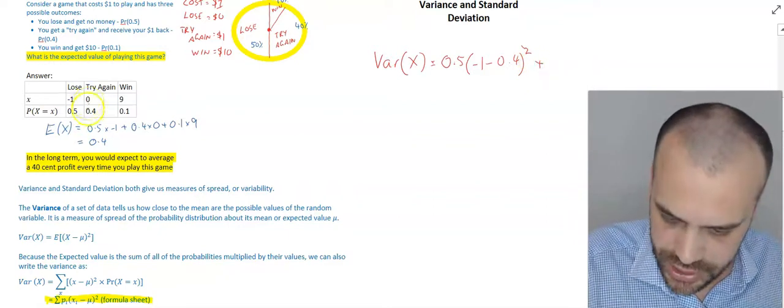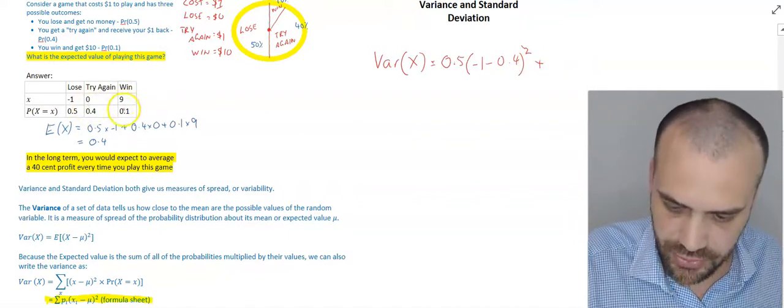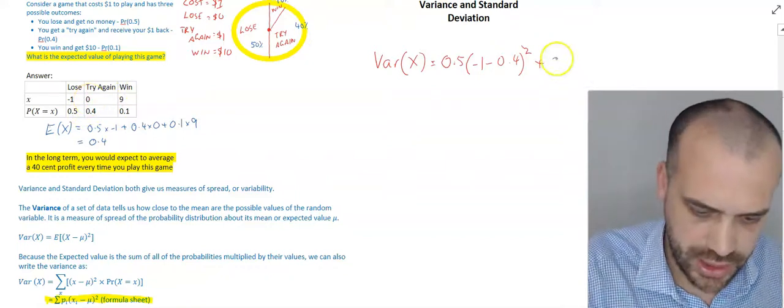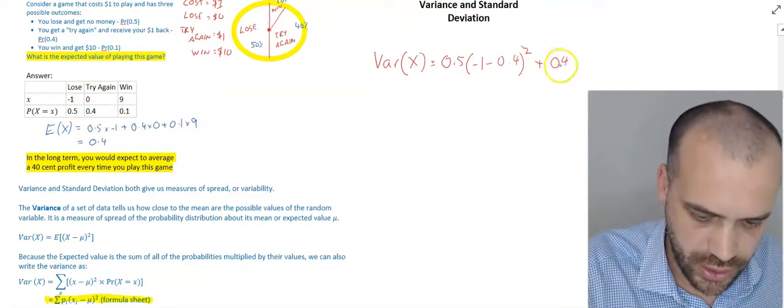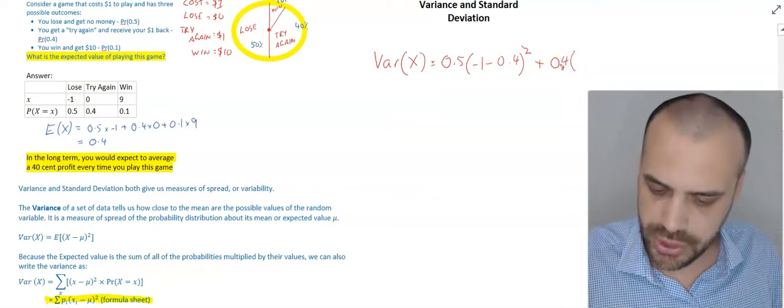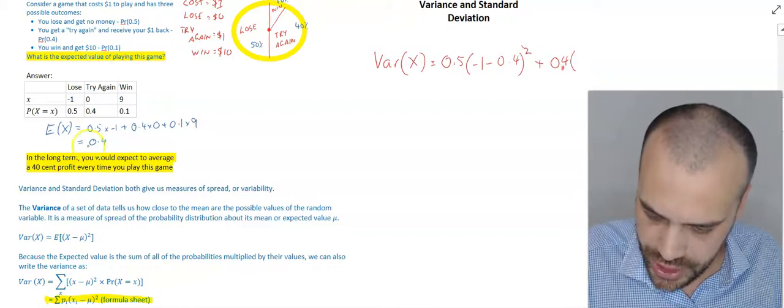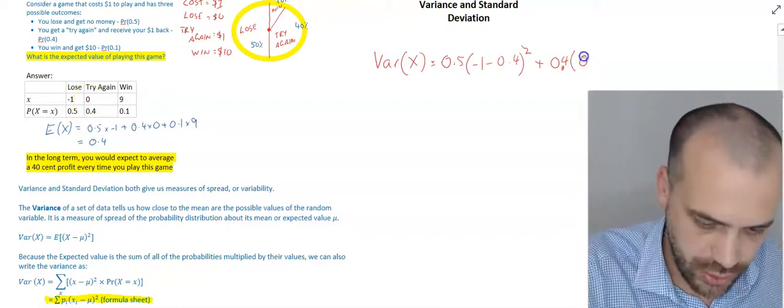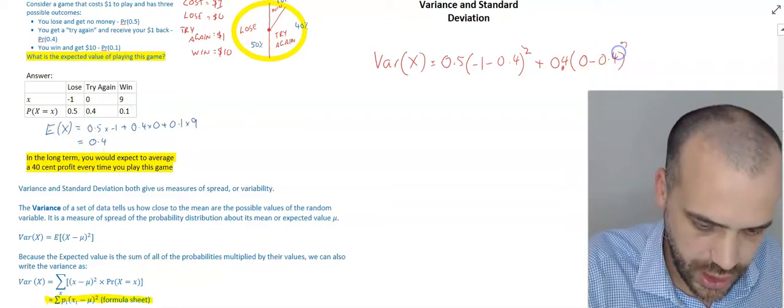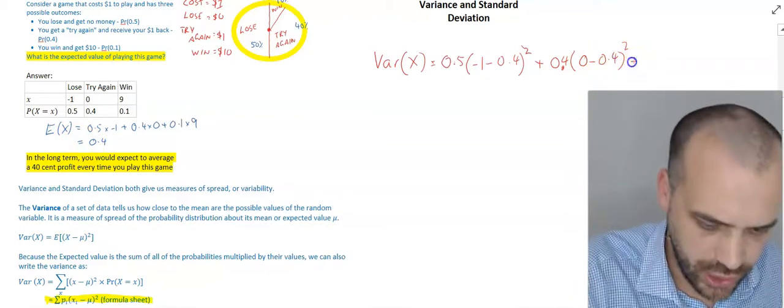Now, we're not done yet because we also need to do the same for this set of values and the same for this set of values. So, the probability of this set of values happening is 0.4. We're multiplying it by the x value, which is 0, minus the mean, which is 0.4. And we're squaring it.